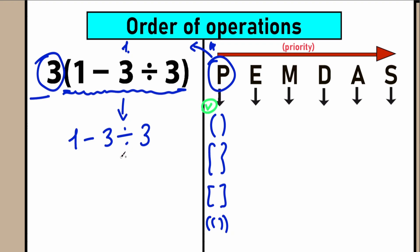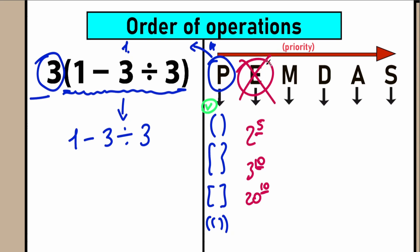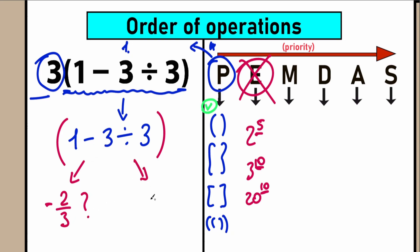We can quickly skip exponents — E in PEMDAS — since we don't have any powers in this question. Now inside the parentheses we have 1 minus 3 divided by 3, and there are two ways to approach it. The first way is left to right: 1 minus 3 gives minus 2, then minus 2 divided by 3 gives minus two-thirds. Or we divide first: 3 divided by 3 equals 1, then 1 minus 1 equals 0.